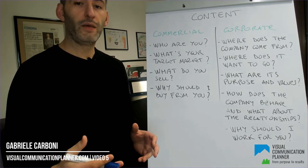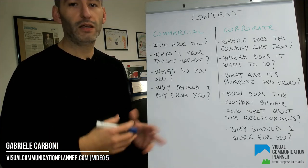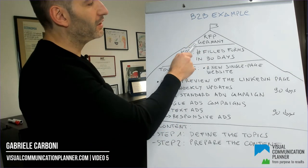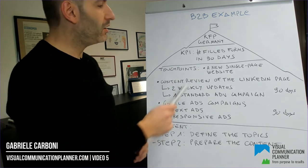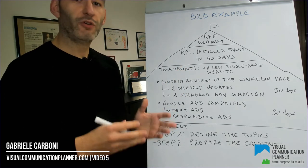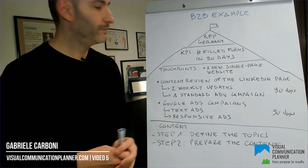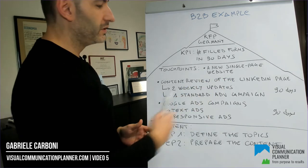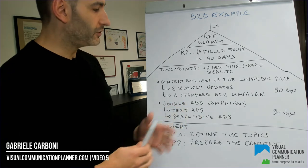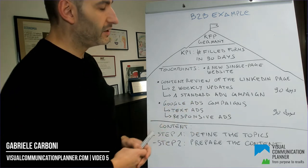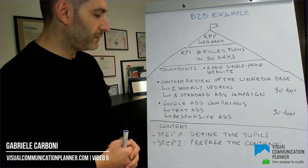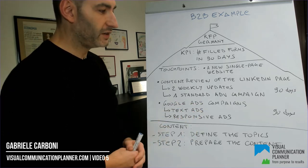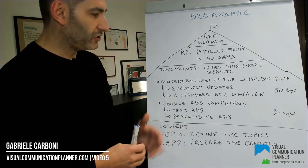So let's gather our ideas for the B2B example we are bringing from the previous videos. We need to find the goal: new request for proposal from Germany. KPI: the number of requests through the website from each web touchpoint in 90 days. Channels and activities: a new single page website, a content review for the LinkedIn page, two weekly updates in German, one advertising campaign for 90 days with a 10 euros per day budget, and one Google Ads campaign with text ads and responsive ads, again with 10 euros per day for 90 days.